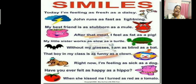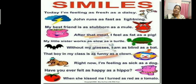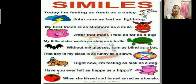'My little sister works as slow as a turtle.' Sister and turtle — what is the same adjective? Slow. Both are slow. 'Without my glasses, I am as blind as a bat.' 'That boy in my class is as funny as a clown.' Clown is a joker. 'Right now I am feeling as sick as a dog.' 'Have you ever felt as happy as a hippo?' 'When she kissed me, I turned as red as a tomato.' Clear, children?